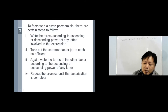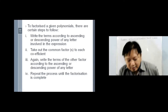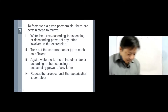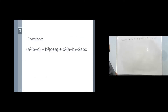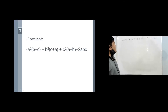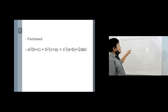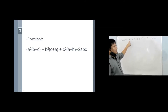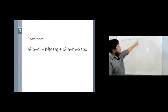Let me show you with one or two examples. For the first one, factorize a² (b + c) + b² (c + a) + c² (a + b) + 2abc. In this process, the first thing is to arrange it according to ascending or descending power of the letter. If you look at this, a is in ascending alphabet order: a, b, c. So it is already arranged.